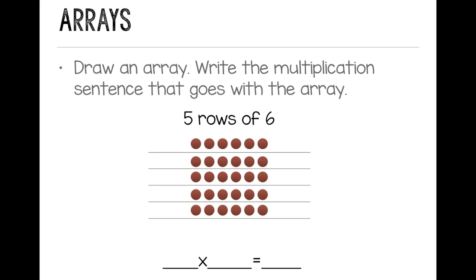And then to write my multiplication sentence, my first factor is the number of rows, 5, times the number in each row, 6, and I can find my product by counting up all of the dots in my array. 5 times 6 equals 30, so my product is 30.